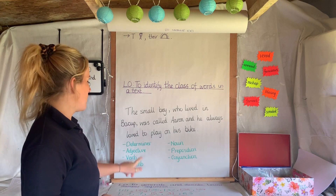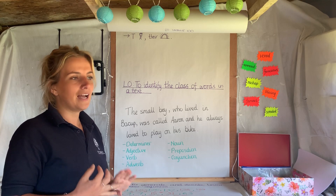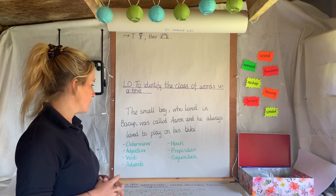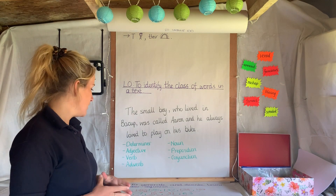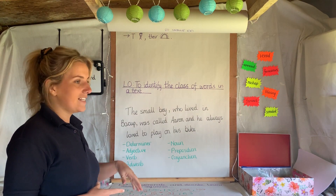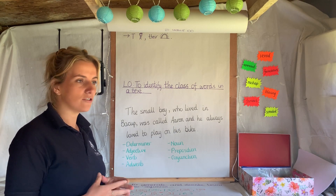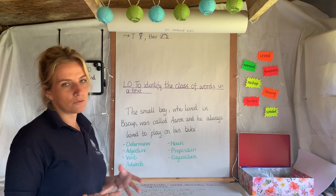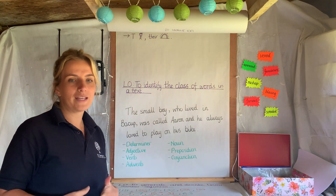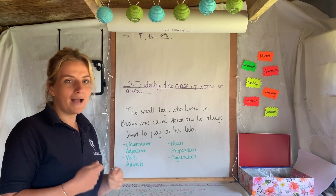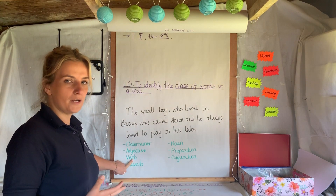We know that determiners determine the object or the thing — for example, 'the'. We know that an adjective describes a thing or a person. A verb is a state or a matter of occurrence, but it's also a thing that someone or something might do. An adverb describes this — for example, 'quickly'. If you eat, then you might eat quickly. So it describes how you are doing the verb.